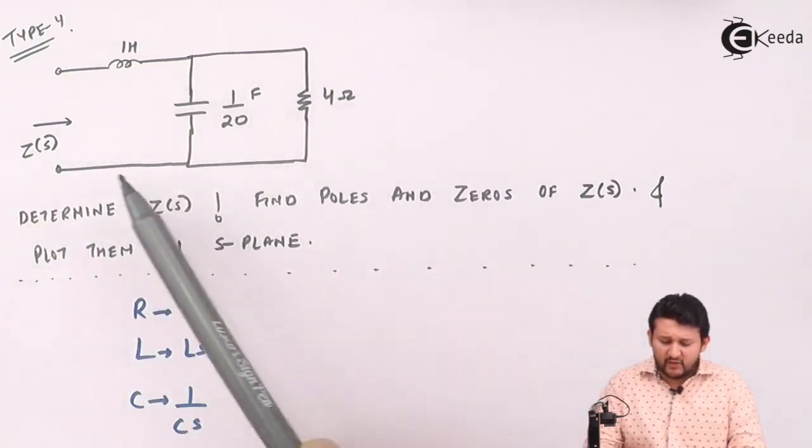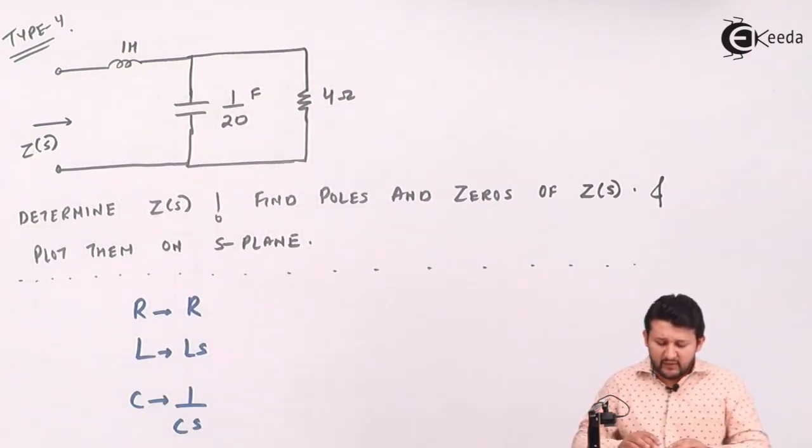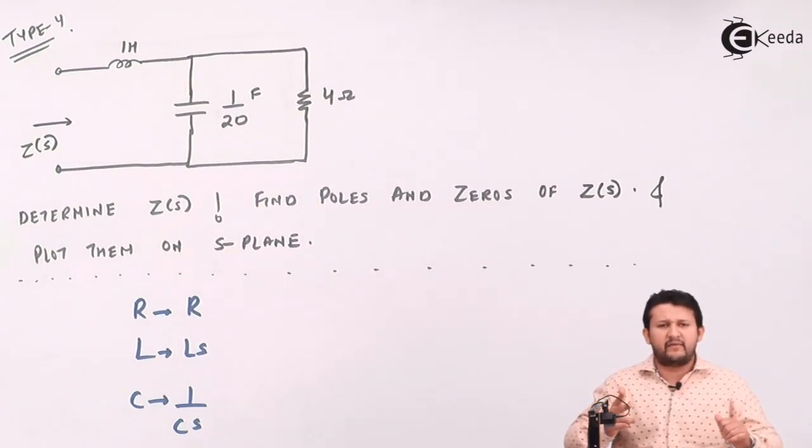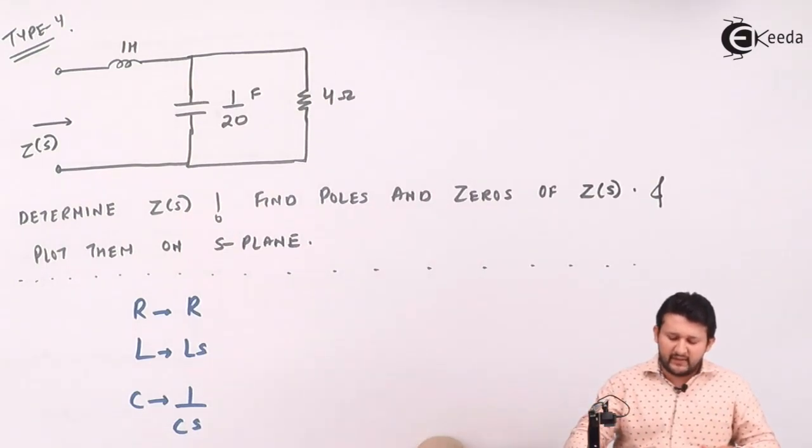This circuit is given to you. The first rule is that you have to convert this circuit into Laplace. R will be R, L will be LS, C will be 1 upon CS. So let's convert it.